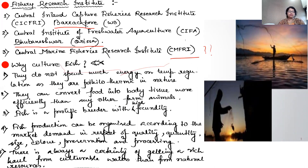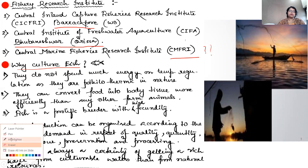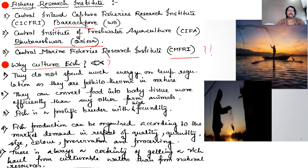Why do you actually need to culture fish? First, they do not spend much energy on temperature regulation as they are poikilothermic in nature — they don't need to regulate their body temperature. Second, they can convert food into body tissue more efficiently than any other farm animal, which is very important.